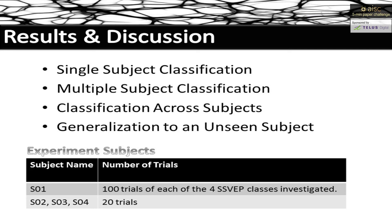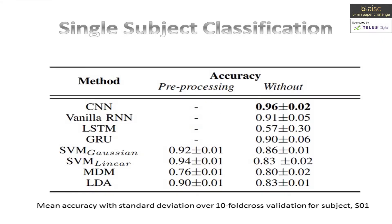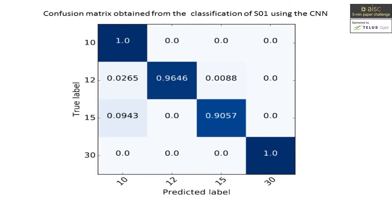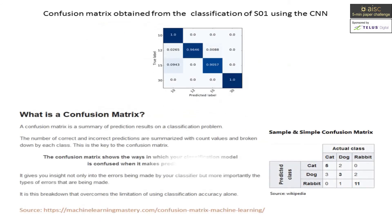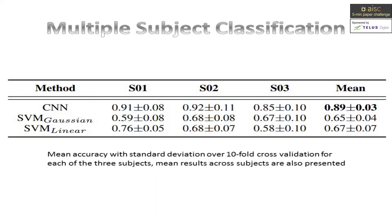Results for single subject classification show that even without any preprocessing, the CNN approach has superior performance over the baselines. Here is the confusion matrix of the results. This table shows classification performance across subjects S0 through S3, where a new classification model is trained for each subject. The number of trials per subject for each class was 20, and even with a reduced quantity of data, CNN still outperforms SVM across all subjects.